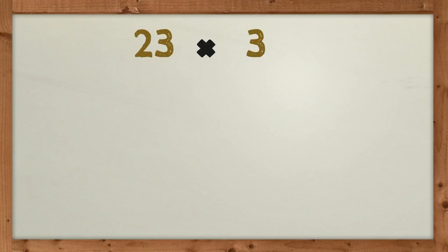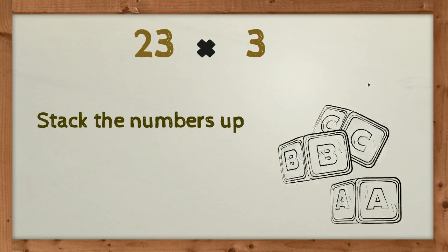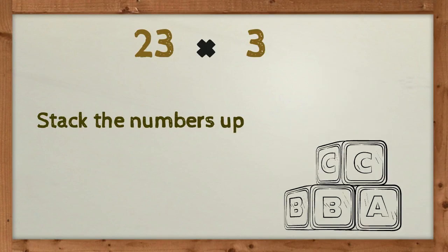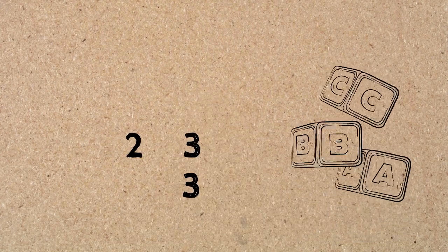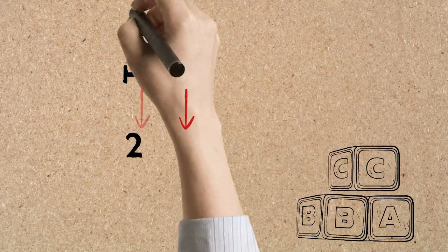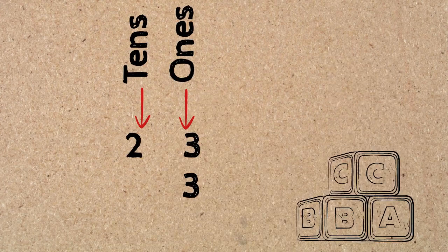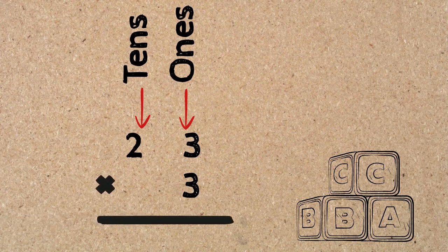Let's have a look at the first example: 23 times 3. The first thing that we do is what we always do with addition and subtraction — we stack up the numbers. As always, we stack them up so that the ones places are in one column and the tens places are in one column. When we finish, we draw a line right underneath to write our answers and we put a cross sign on the side to show that we're multiplying.